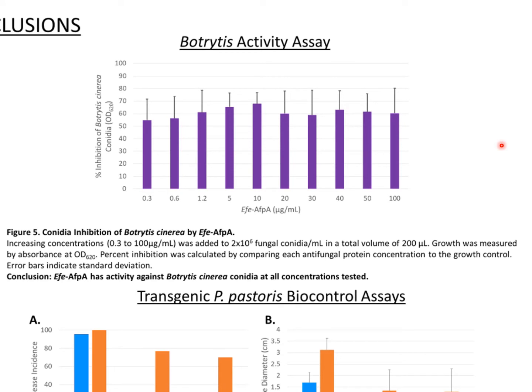Now that we know EFE-AFPA is active against Clarireadia jacksonii mycelium, we want to test it as a biocontrol on turfgrass. Before that, we chose to use it in a more characterized system — gray mold of apple, caused by Botrytis cinerea. We tested our pure protein against Botrytis cinerea conidia in a 96-well plate at an absorbance of 620 nanometers, and over a wide range of concentrations our EFE-AFPA showed high inhibitory activity against the conidia.